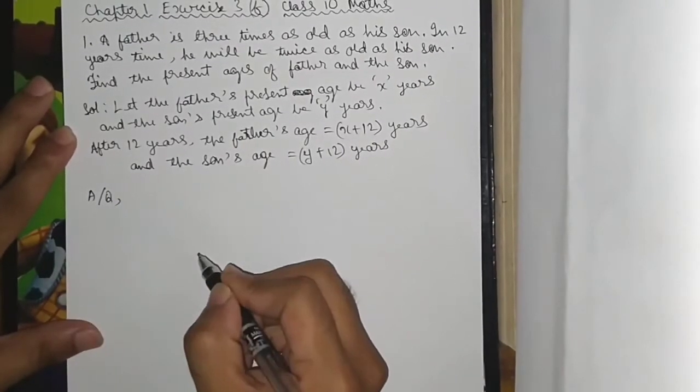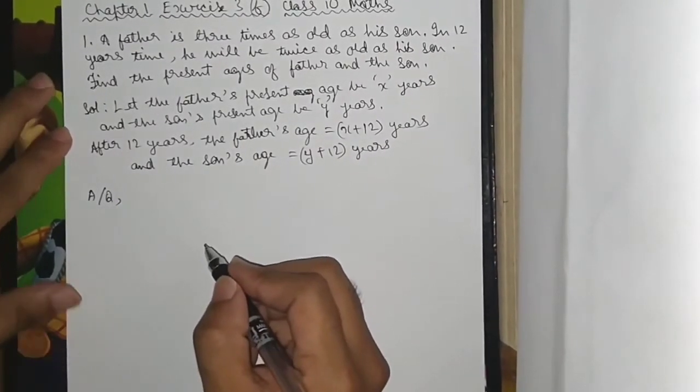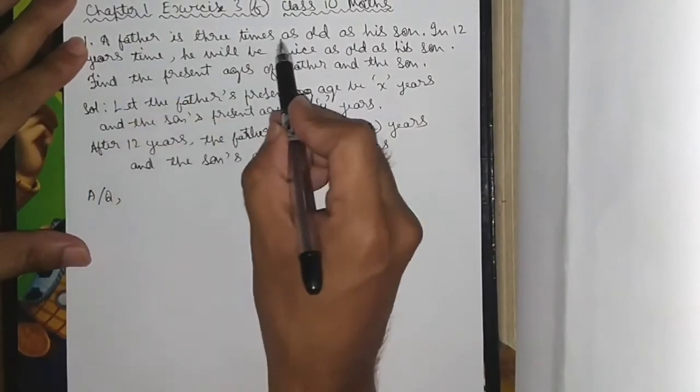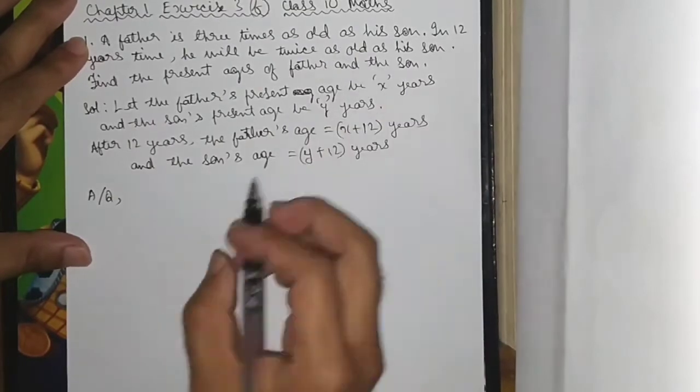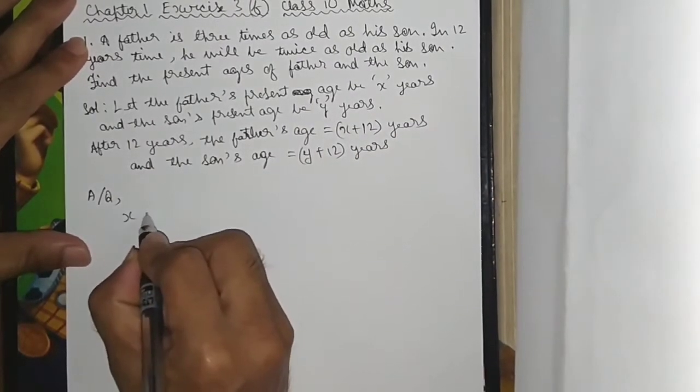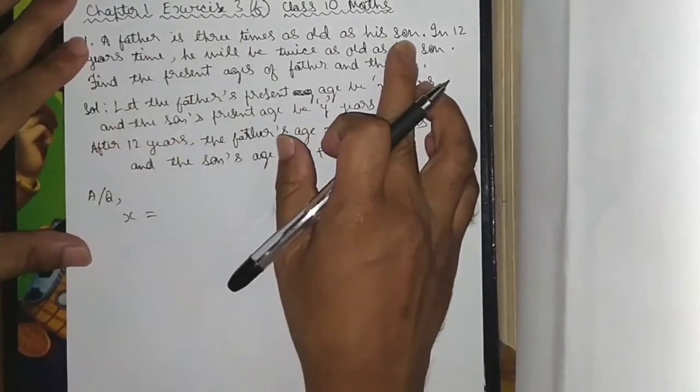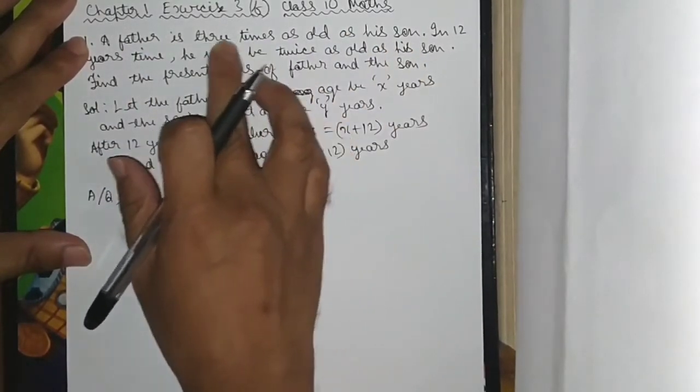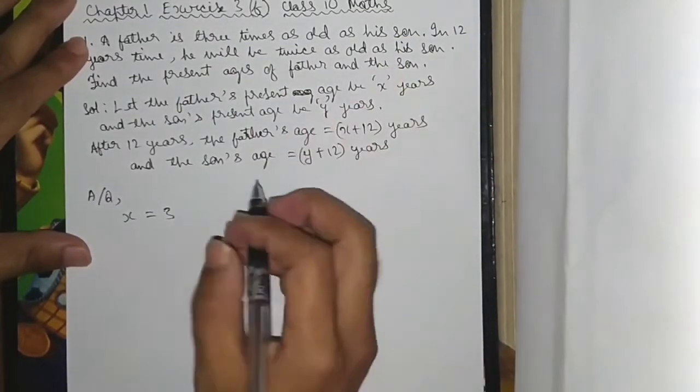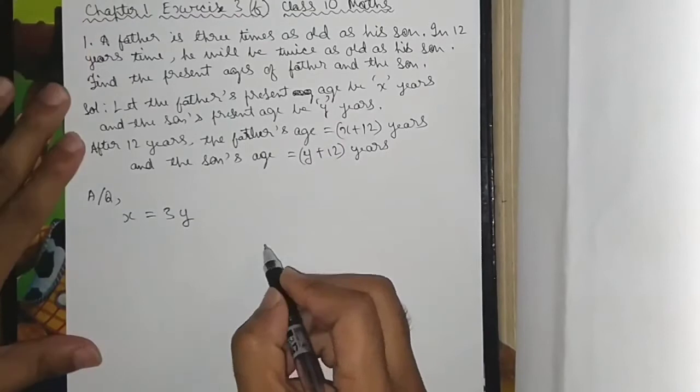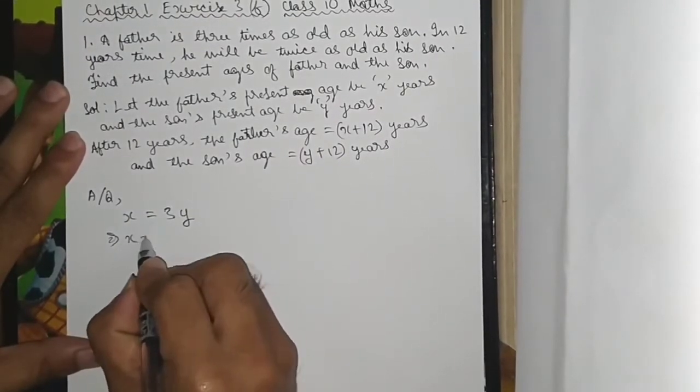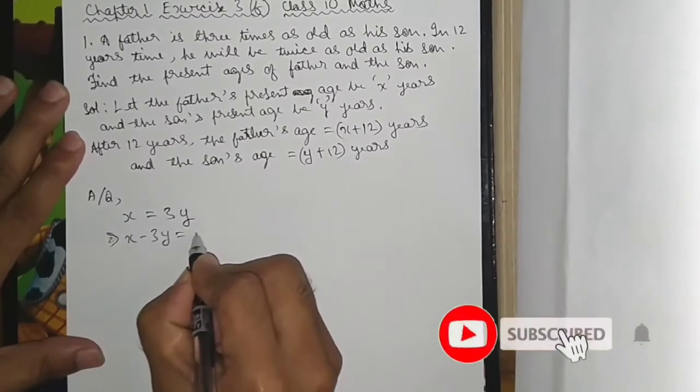According to the question, the father is three times as old as his son. So the father's age x equals three times the son's age, which is 3y. This implies x minus 3y equals 0.